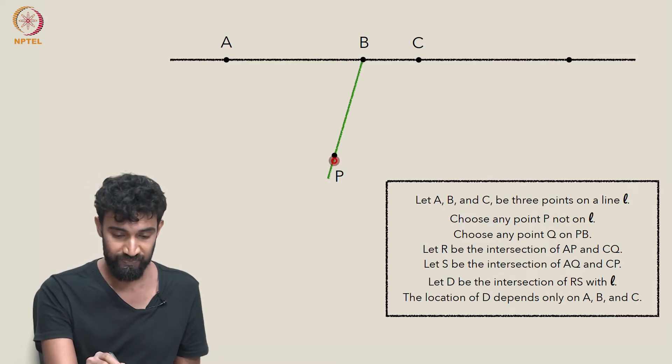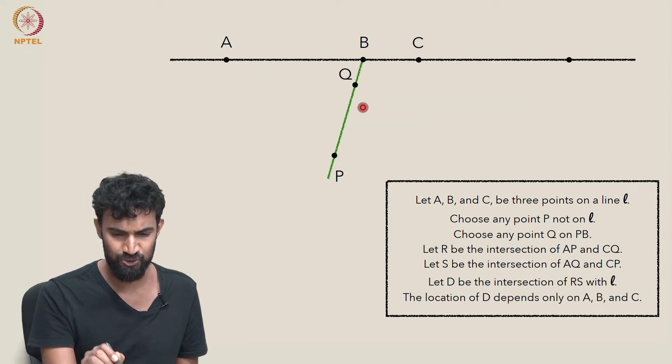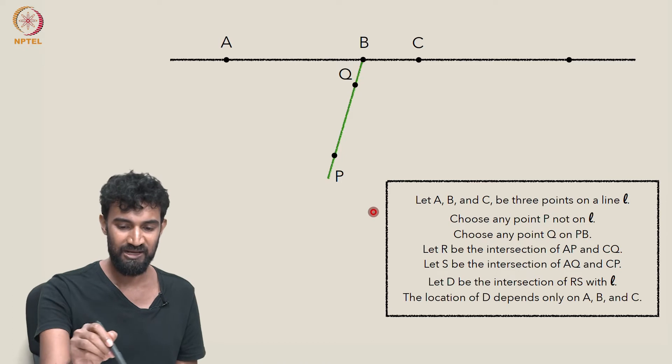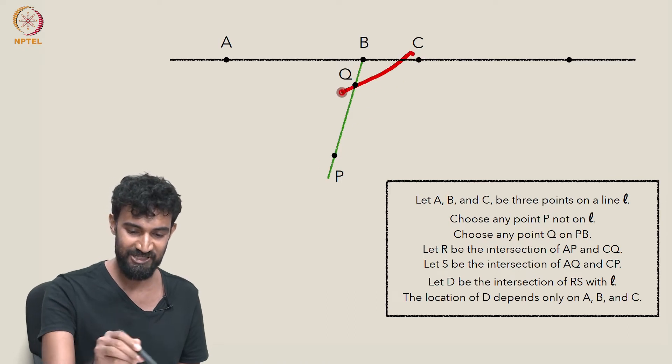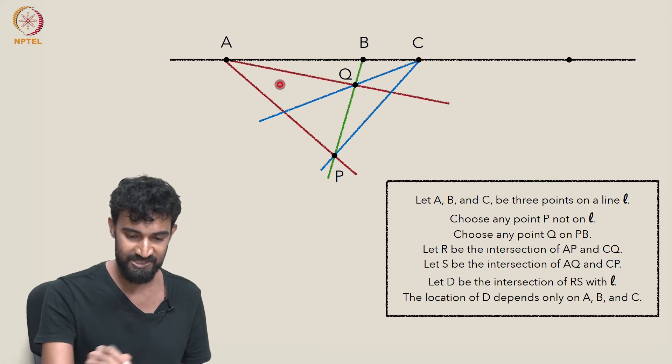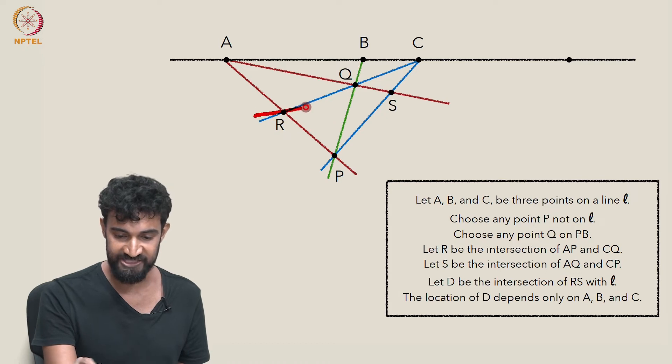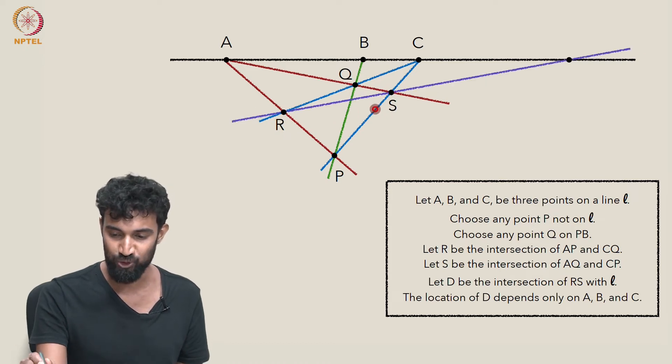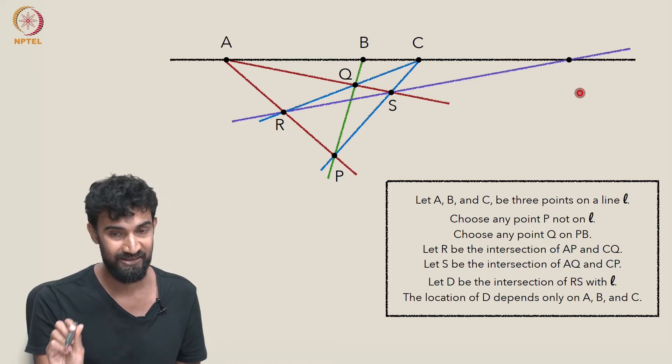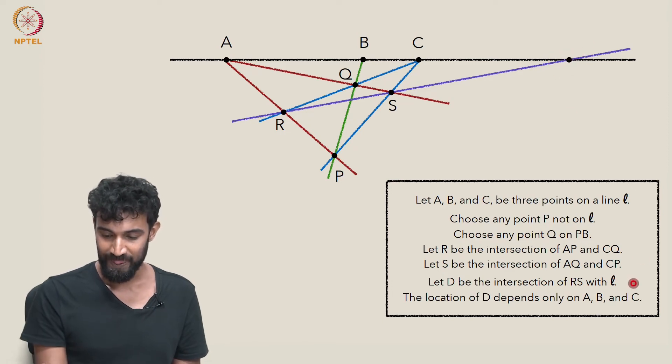Let's choose a different Q. I'll keep my P here. But earlier I chose that Q. Let's put Q higher up. Let's do the same construction. Let's connect CP, CQ, AP, and AQ. Let's mark those lines. And let's mark R and S. Let's draw the diagonal between R and S. And boom, it actually hits that point again. Hits it square on, straight on, that same point D. So we get the same D again.